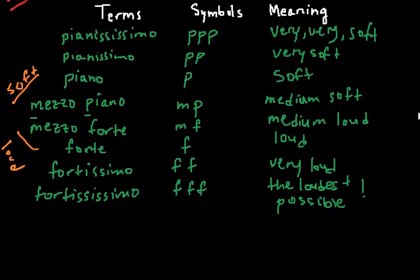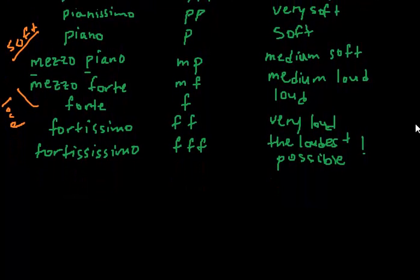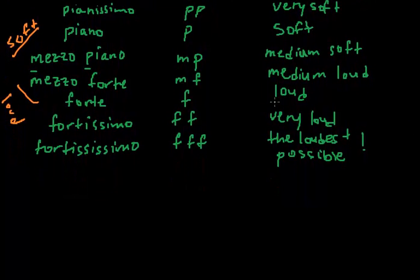The last basic terminology I want to give you are sort of the act of moving between these levels of volume. Now, if you're going to increase your volume gradually, you're going to designate that with the term crescendo, which is abbreviated C-R-E-S. Or you can put this over your musical piece, which is basically a gradual increase in line.